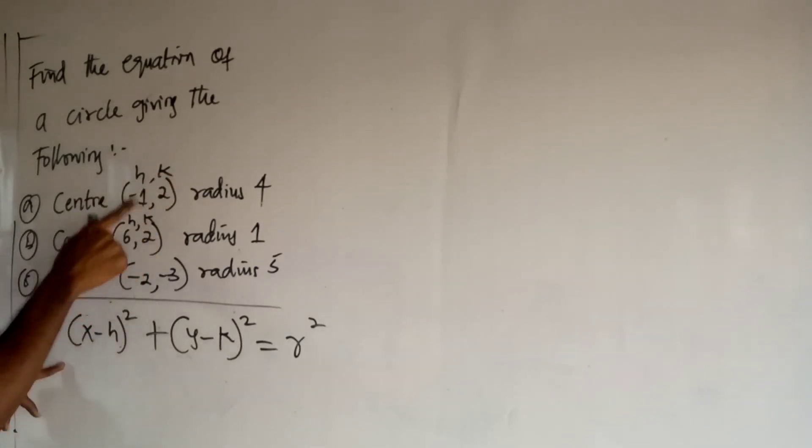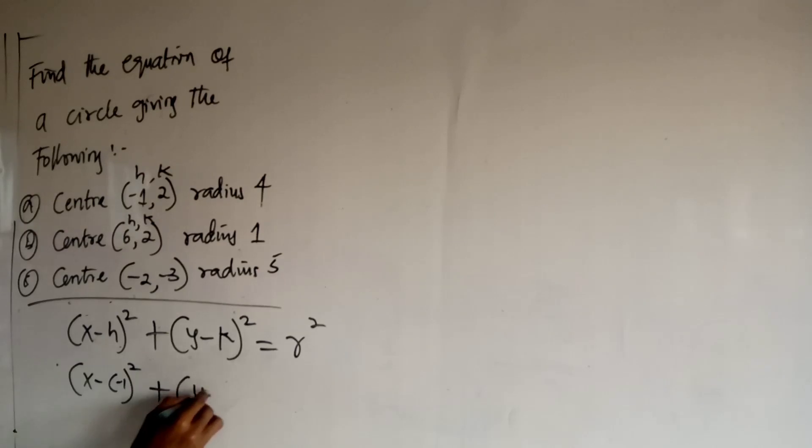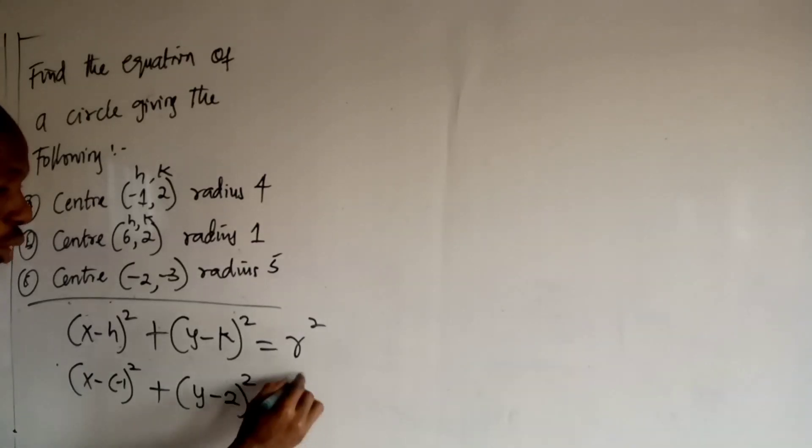So now in this case, my h is minus 1. So I'm going to come over here and plug in minus 1 here. So I have x minus minus 1 squared plus y minus, my k here is 2, so y minus 2 squared, then equal to, radius is 4, 4 squared.